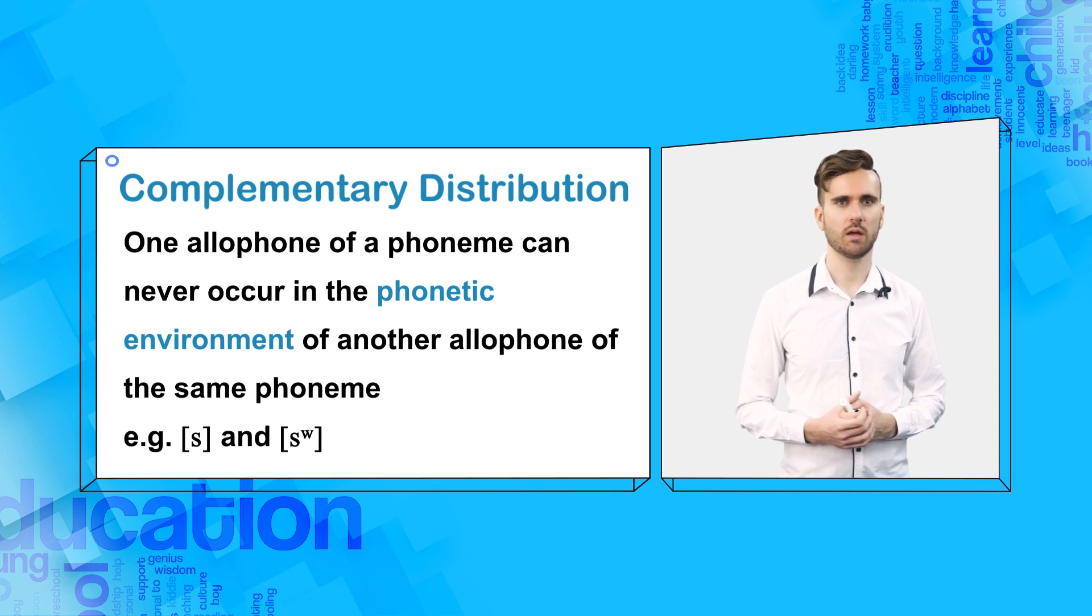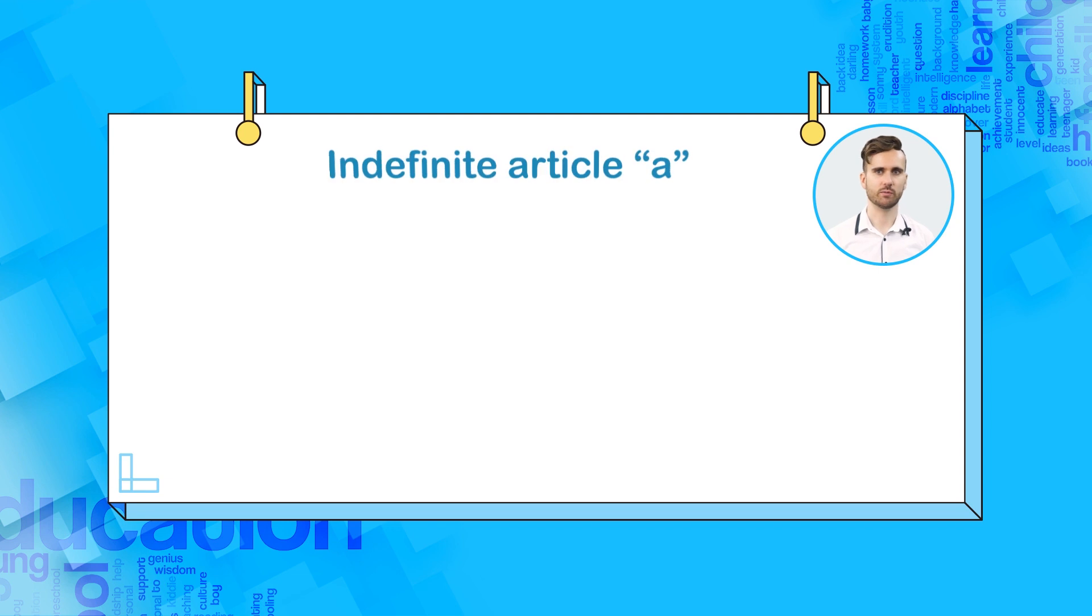For example, the phonetic environment of [sʷ] is a rounded vowel, because [sʷ] is only used if the vowel afterwards is rounded. Therefore, the consequence of this phonetic environment is that [sʷ] can never be in the same place as [s]. Let's look at two more examples.